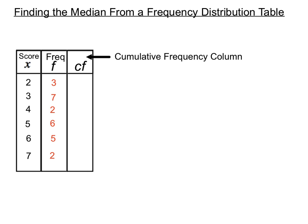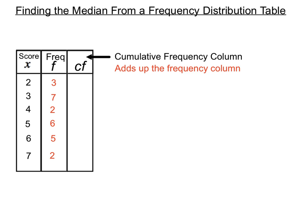The cumulative frequency column adds up the frequency column as we go, creating a running total. We'll use it to figure out what the median of this set of scores must have been.